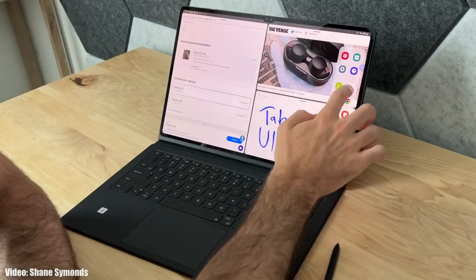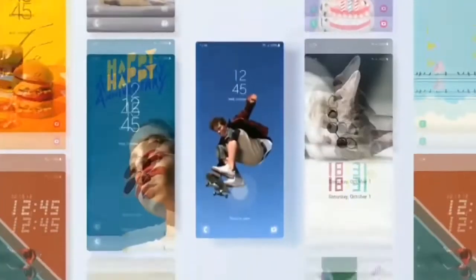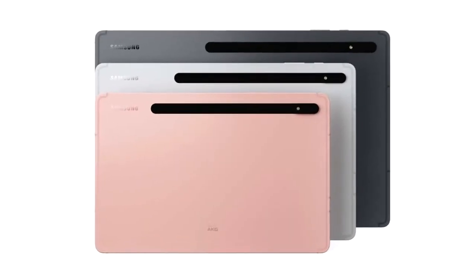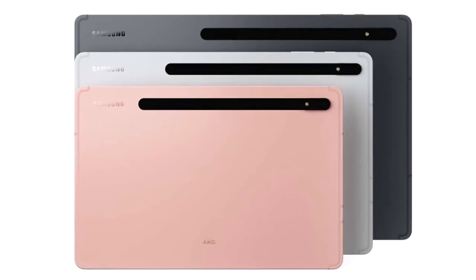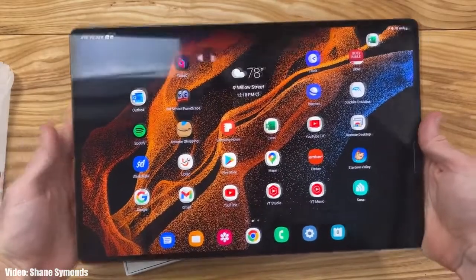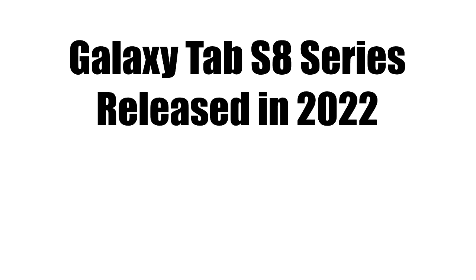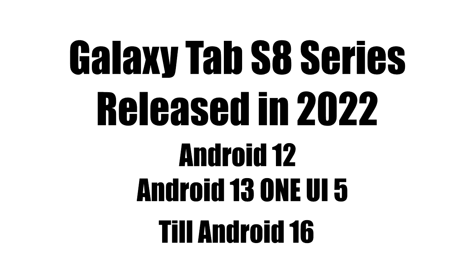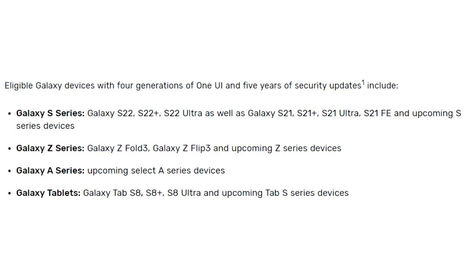Samsung is now rolling out the official Android 13 One UI 5 update to their tablet lineup, starting with the Tab S8 series, which includes the Tab S8, S8 Plus, and S8 Ultra. If you haven't received the update notification yet, you'll get it by the end of this month. Samsung released the Tab S8 series in 2022 with Android 12, and this is its first major Android update. The Tab S8 series falls under Samsung's four years of software update policy, meaning it will continue to receive updates until Android 16.